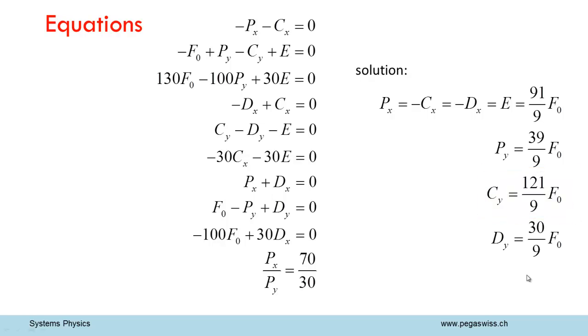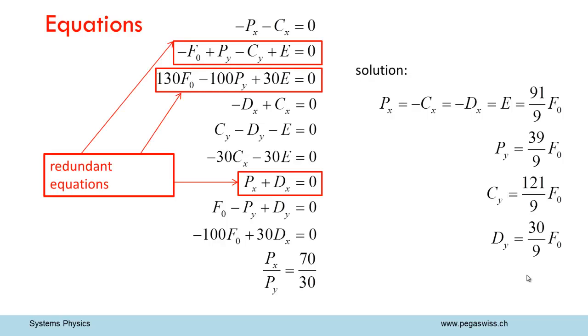In solving the system of equations, you notice that there are three redundant equations. For example here. Since Px plus Dx equals zero, Dx equals minus Px. Now, according to a second equation, Dx and Cx must be the same. A third equation implies that Cx plus Px also equals zero. Therefore, these three equations are linearly dependent.